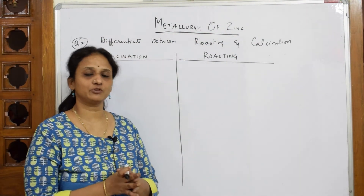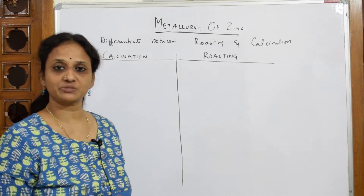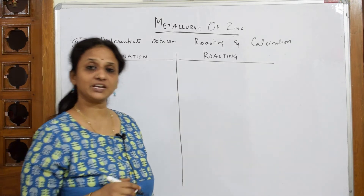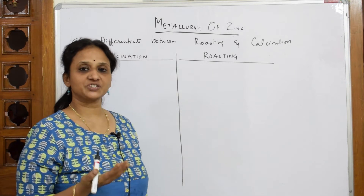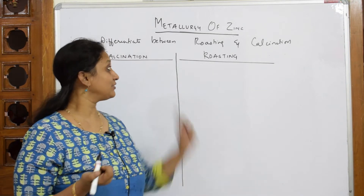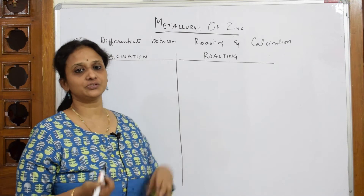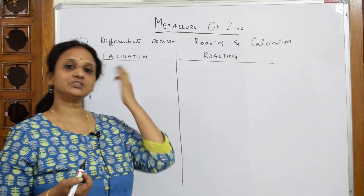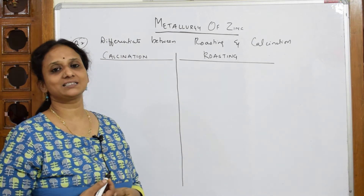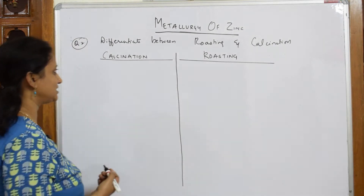So now what did we do? We have already concentrated the ore with the froth flotation method. Now we are going to take that concentrated ore which is dried up and allow it to undergo calcination and roasting. So when they are asking you to differentiate calcination and roasting, it is a very simple question to answer.